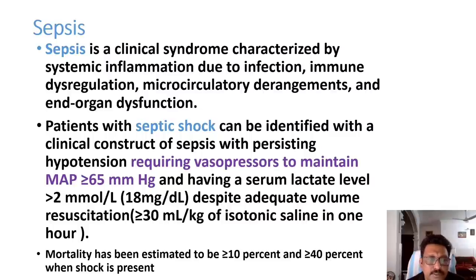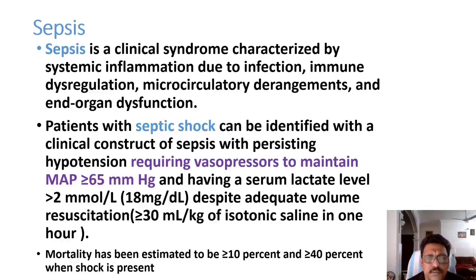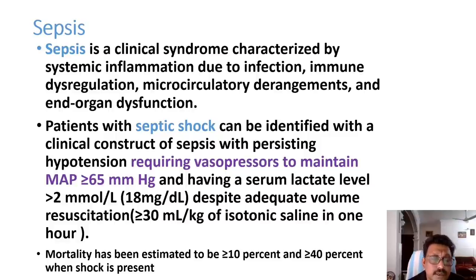Sepsis leads to microcirculatory derangement and end organ dysfunction. Most of the time sepsis is due to bacteria — it can be gram negative or gram positive — but it can also be due to fungus or virus. Any organism can produce sepsis. The toxins produced by bacteria can cause toxemia; sometimes the bacterial count may be minimal but toxins are maximal. A dysregulation in our immunity can also produce an increased inflammatory response against an infection, contributing to sepsis.